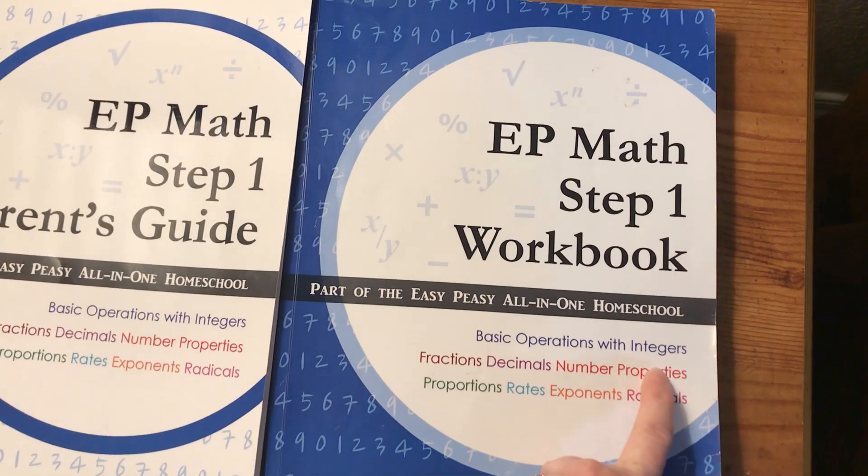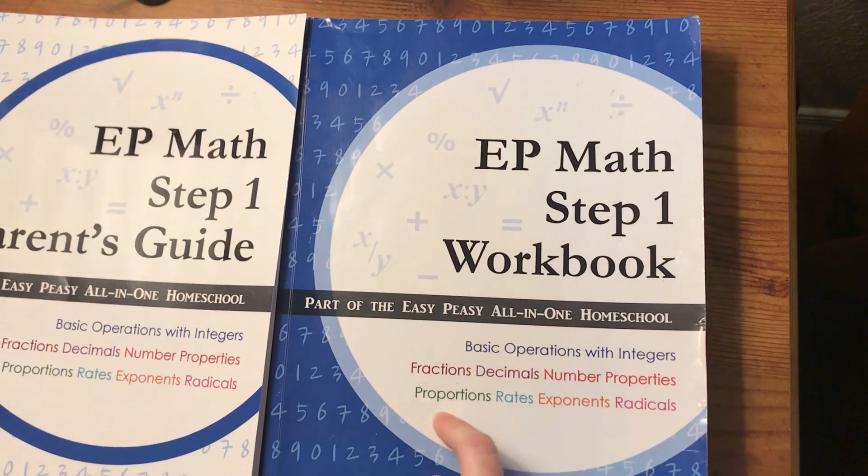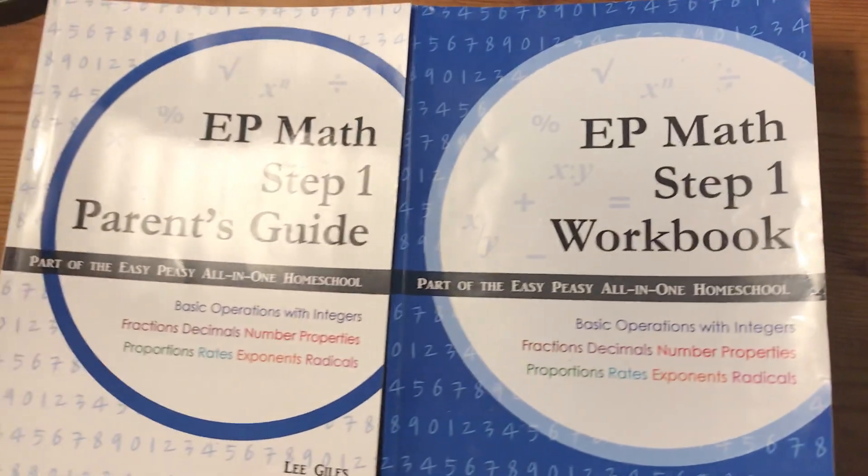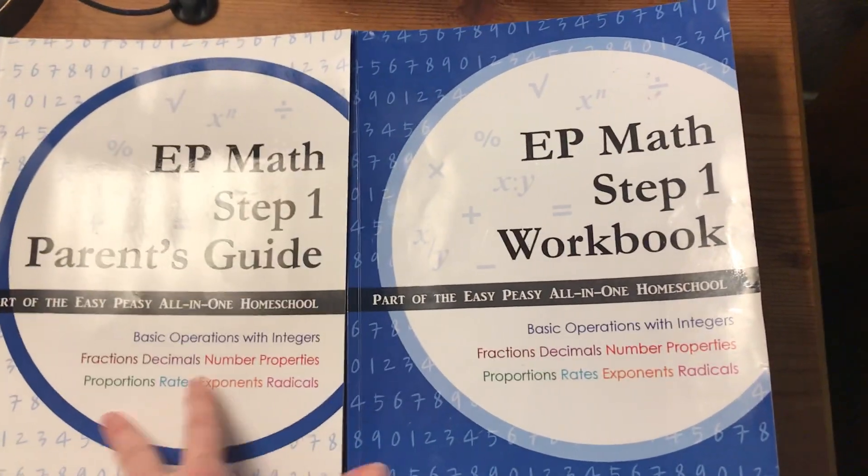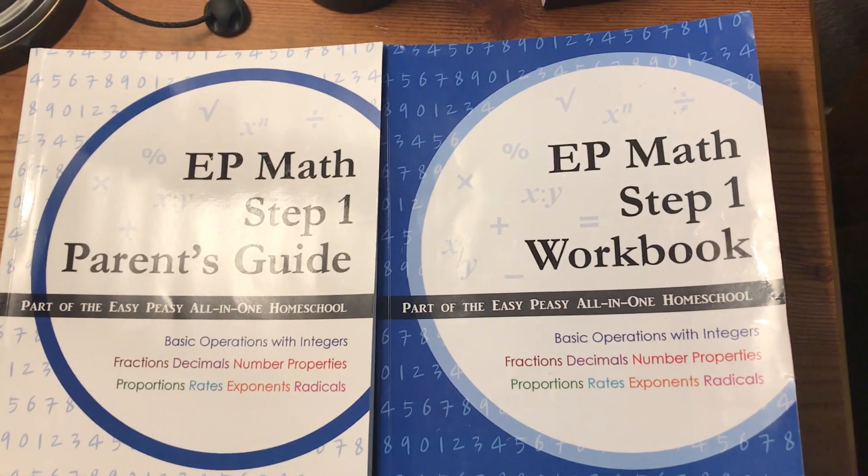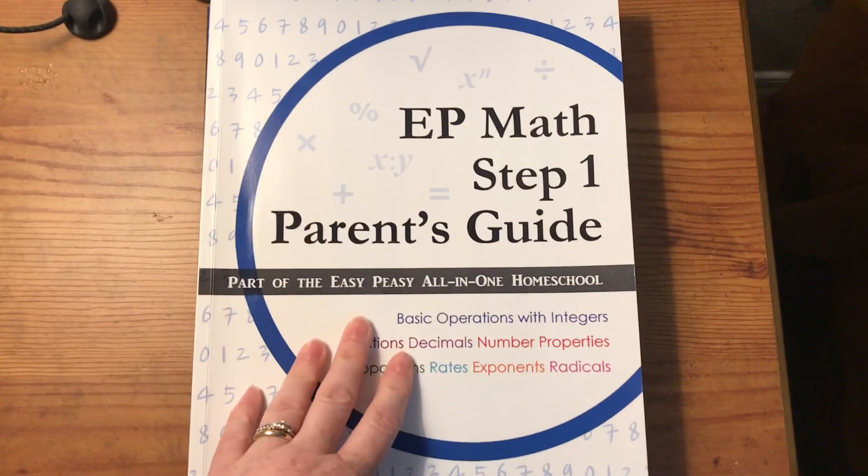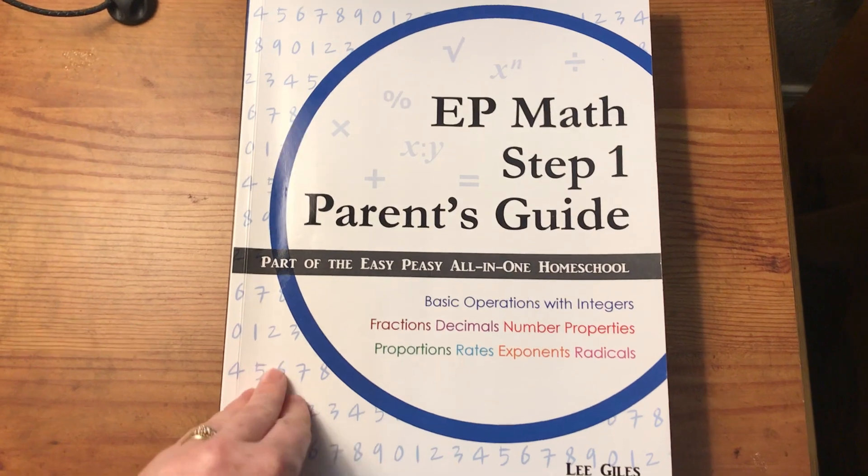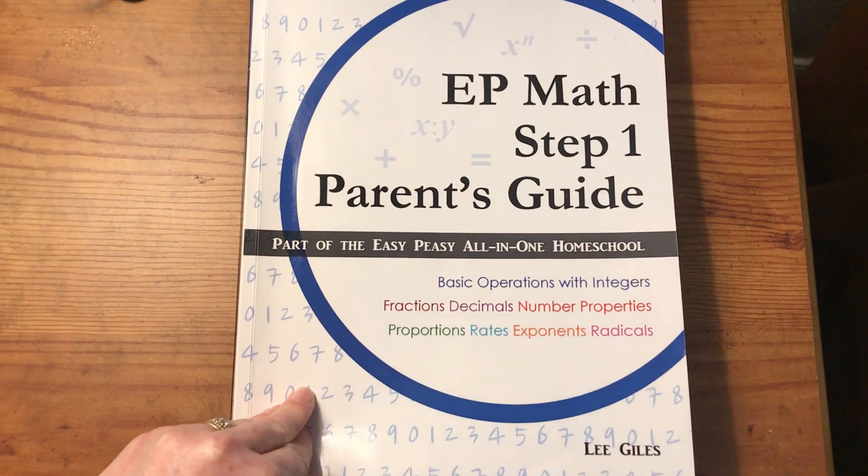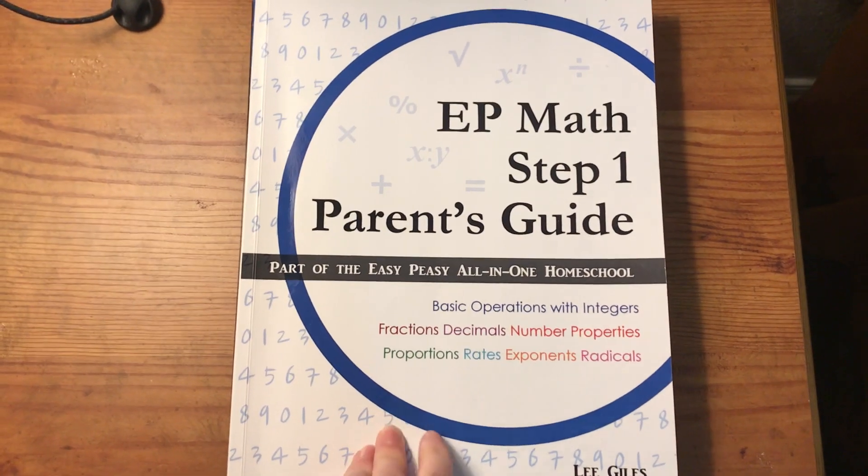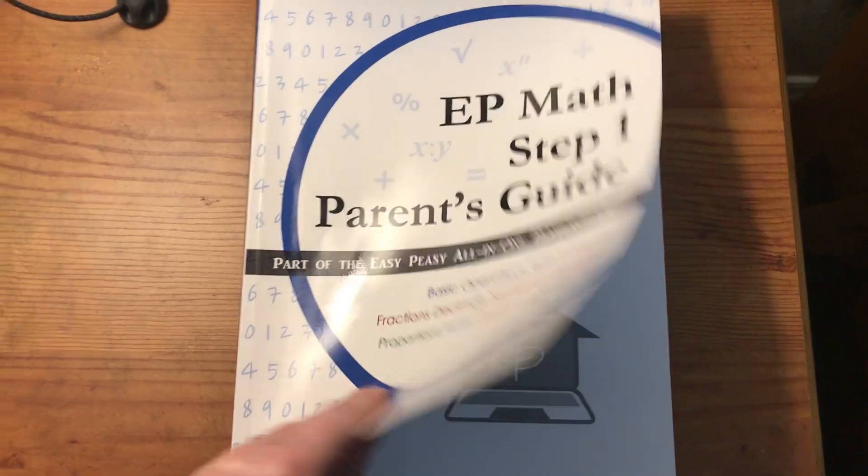It covers basic operations with integers, fractions, decimals, number properties, proportions, rates, exponents, and radicals. So this covers quite a lot and I feel like after they've done this they are prepared for a pre-algebra program. So that means my daughter will likely do pre-algebra next year and then move into algebra in ninth grade. So I think this is perfectly appropriate to do in any of the middle school grades.